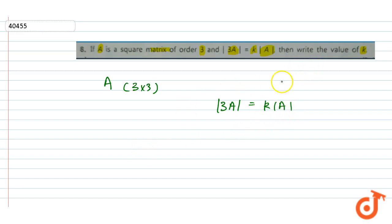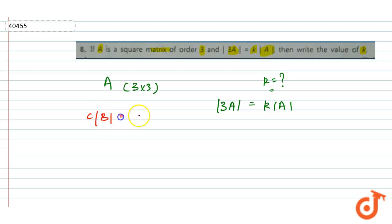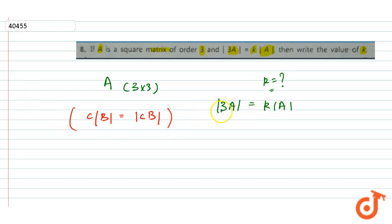अब हमारे पास property होती है कि कोई भी scalar into matrix का determinant निकालें — let it be scalar into matrix B — तो हम इसे लिख सकते हैं। इस property को use करें तो det(3A) को हम 3 into det(A) की form में लिख सकते हैं।